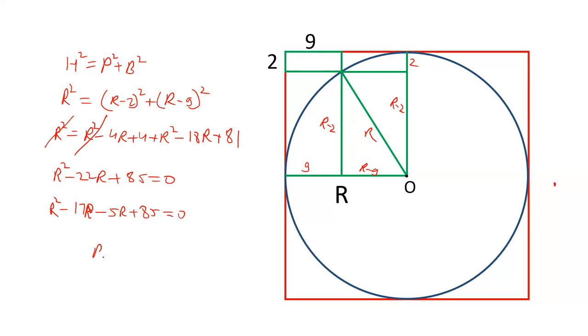Solving this equation we will get R is 17 or R is 5. But R is 5 not possible. R is more than 9, and therefore the value of radius is 17. You can check here also. This is 17, 17 minus 2 is 15, 17 minus 9 is 8. So remember, if you can think of some Pythagoras triplet, you can give the answer directly also.